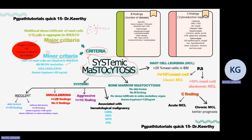Minor criteria include: presence of the KIT D816V mutation; mast cells expressing CD2, CD25, and CD30 abnormally; serum tryptase levels more than 20 nanograms per milliliter (normally less than 20); and more than 25 percent of mast cells being atypical in the bone marrow or extracutaneous organ.